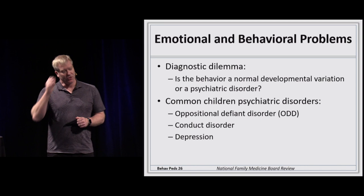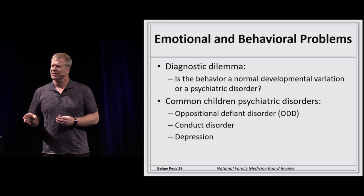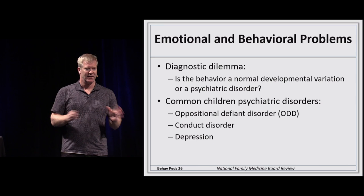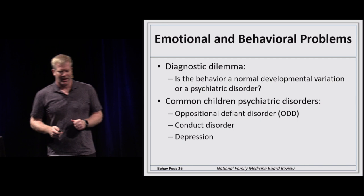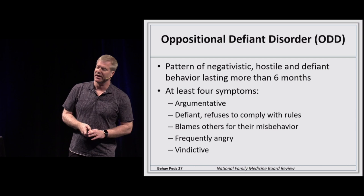Emotional and behavioral problems present a diagnostic dilemma — it can be hard to distinguish a stage of adolescence from a true behavioral disorder. We'll cover three common ones: oppositional defiant disorder, conduct disorder, and depression. Oppositional defiant disorder involves directly confrontational, in-your-face behavior that differs from conduct disorder.